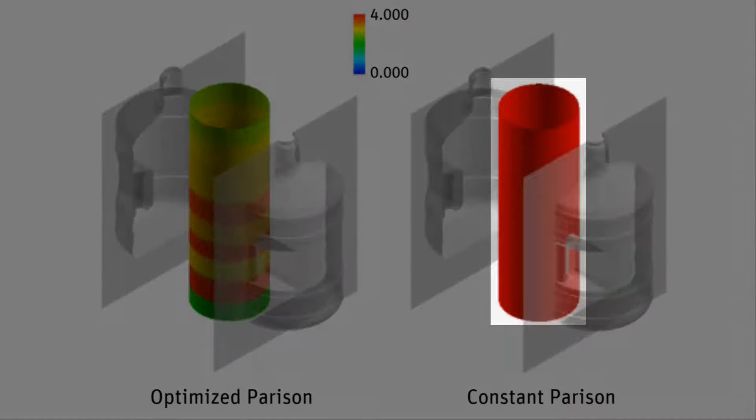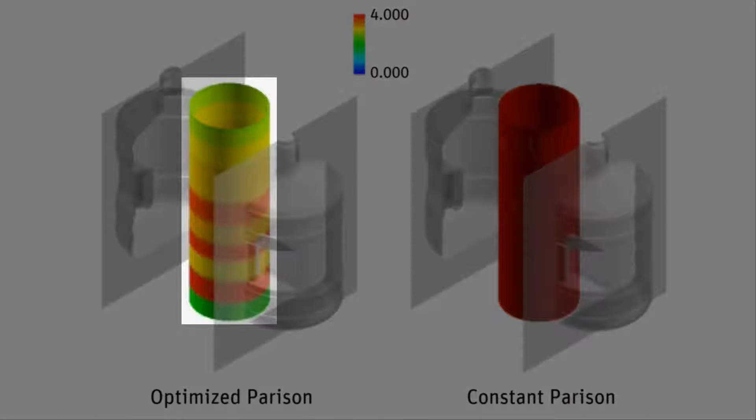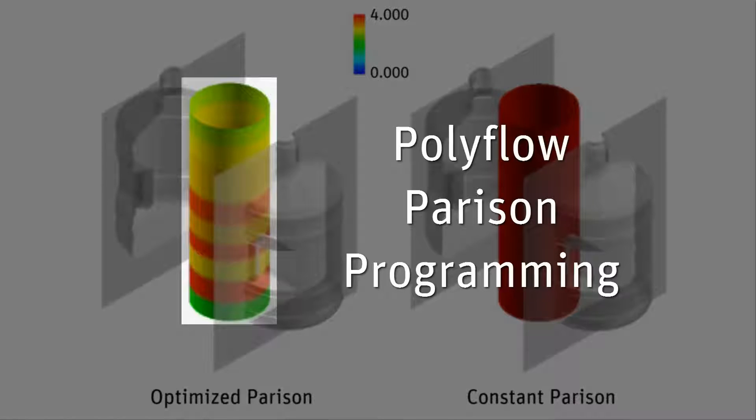On the right is an initial design for the parison that has a constant thickness of 4 mm throughout. On the left is a parison that has benefited from Polyflow's parison programming feature.